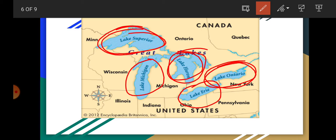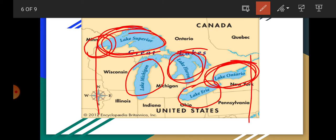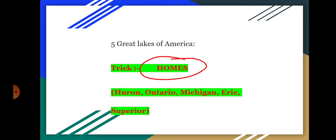In east-west order: Lake Superior, Lake Michigan, Lake Ontario. The easternmost would be Lake Ontario and the smallest would be Lake Erie. These five Great Lakes are done.